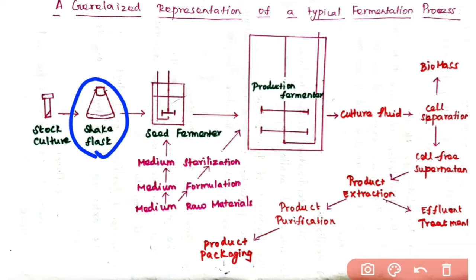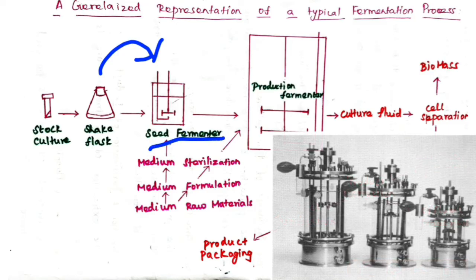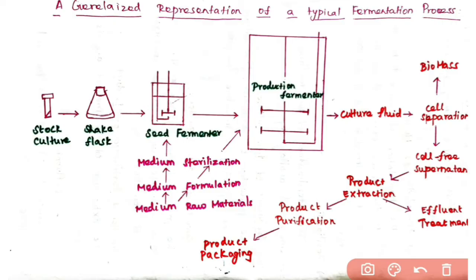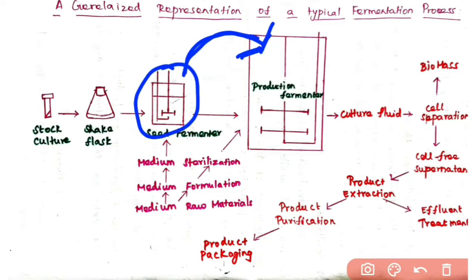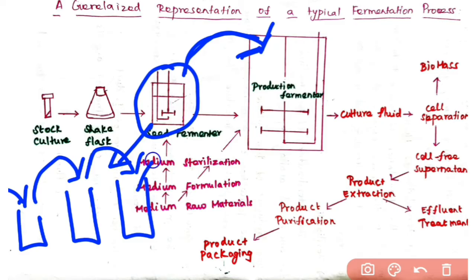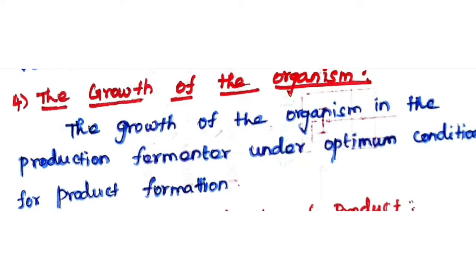After inoculation, the shake flask is placed in an incubator shaker so cells can grow and reproduce to a particular density. These cells are then used to inoculate a small fermenter known as a seed fermenter. Once grown to the required density, the culture is transferred to the production fermenter. If more volume is needed, you scale up through increasingly larger seed fermenters until the required volume and density is reached — this is known as seed train.